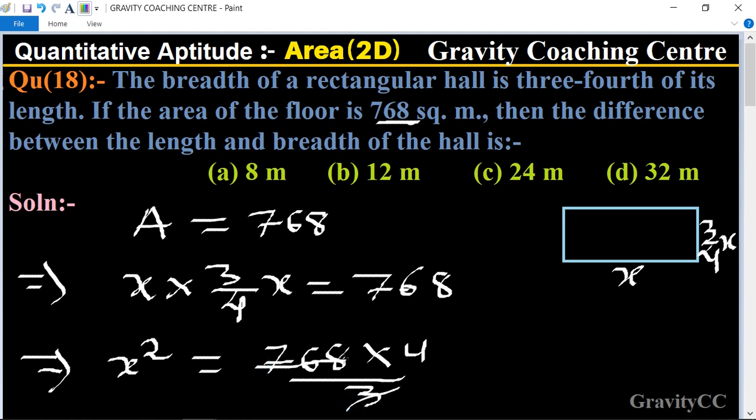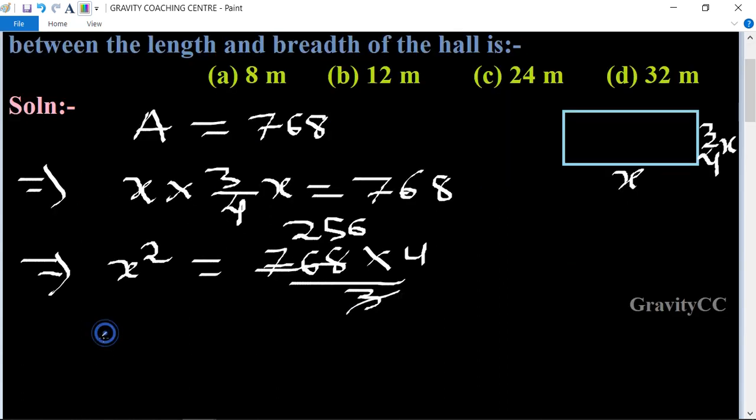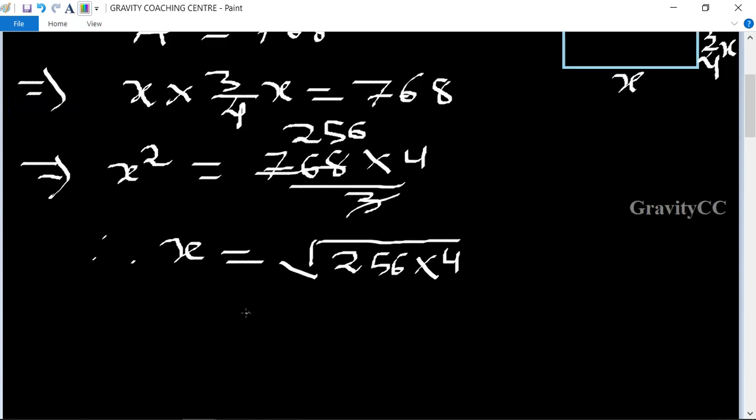Therefore, x = √(256 × 4). The square root of 256 is 16, so x = 16 × 2 = 32 meters.